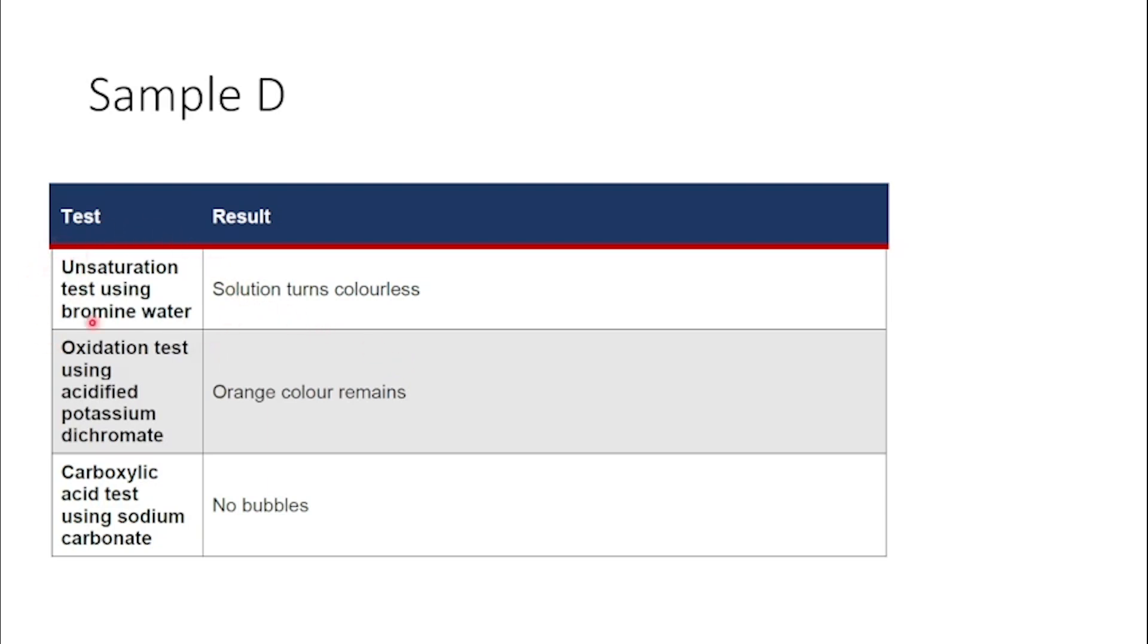The first test we do is the test for unsaturation using bromine water, and so this is whether we have any double or triple bonds in our molecule. For sample D, the solution turns colourless, so we do see a reaction.